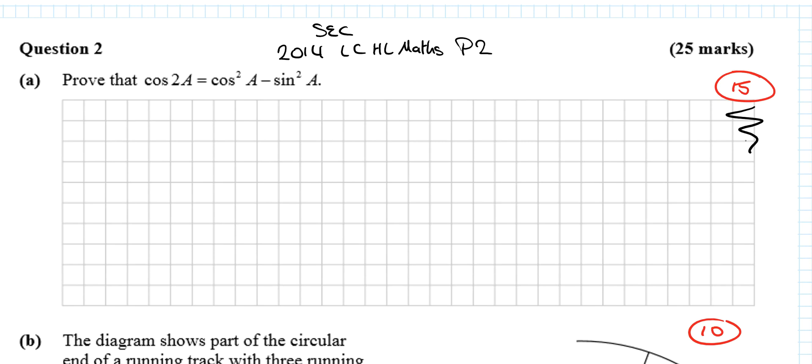Now this is one of the identities or proofs that you need to learn off by heart. There's eight of them and there's a video playlist that I have with all eight of them and all Leaving Cert proofs that you need to know. I'll link that in the description if you're looking for a more detailed answer on it.